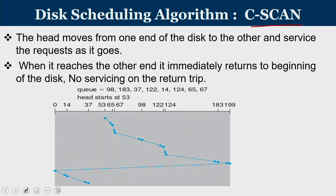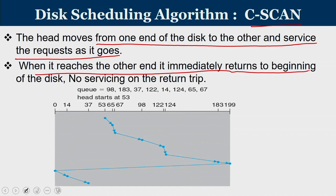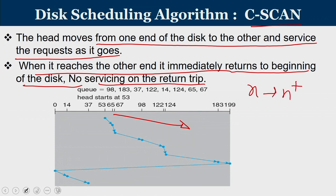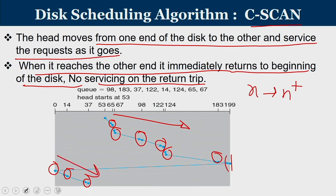Circular SCAN (C-SCAN): the head moves from one end to the other servicing requests, but when it reaches the far end it immediately returns to the beginning without servicing on the return trip. Starting at 53, the head moves to 65, 67, 98, 122, 124, 183, hits the end, then returns to 0 and services 14 and 37 on the next pass. There are two direction changes, but the return trip is at full speed with no servicing.